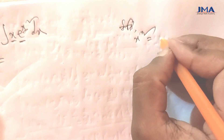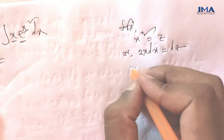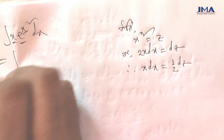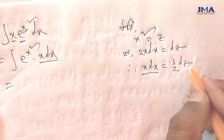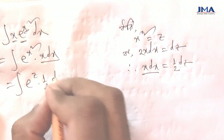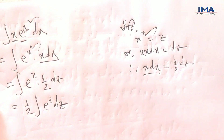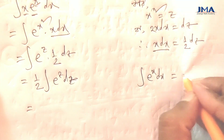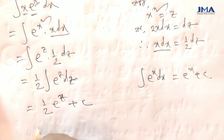x squared equal to z, so we can do this: 2x dx equal to dz, so x dx equal to half dz. So we can do this: x squared times x dx — x dx is half dz — so e to the power x squared times x dx becomes half times e to the power z dz. Integration of e to the power z dz equals e to the power z, so the result is e to the power x plus c.